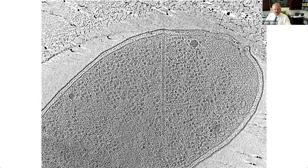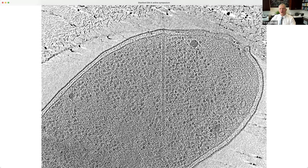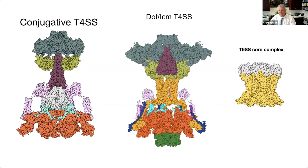What is that type 6 secretion system? My group, about a dozen years ago, were the first to get pictures of it. It's a long, skinny tube with a base complex that carries cargo and can contract like an accordion to push a spike into a target cell. The protein that sits on the inner membrane - the core complex - turns out to have been borrowed into this type 4 system.